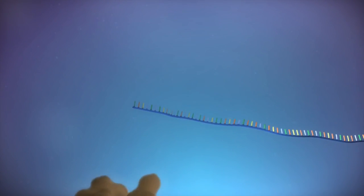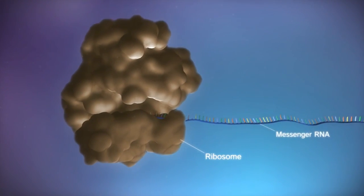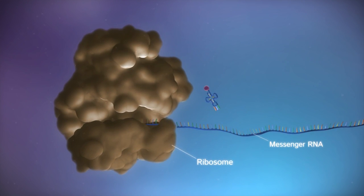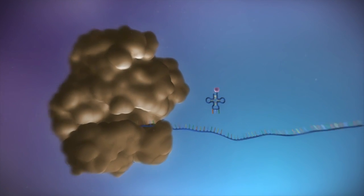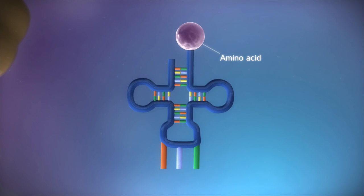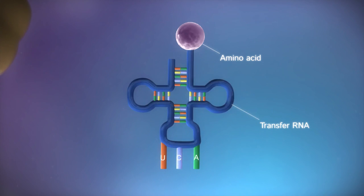Protein factories in the cytoplasm, called ribosomes, bind to the messenger RNA. The ribosome reads the code in the messenger RNA to produce a chain made up of amino acids. There are 20 different types of amino acid. Transfer RNA molecules carry the amino acids to the ribosome.